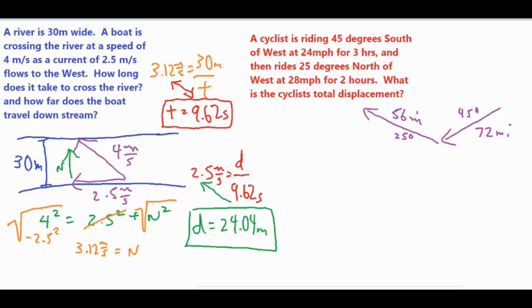This problem requires a few different steps. We need to find the x and y components of each vector. One vector goes west and north, the other goes west and south. We use trig: the vertical components are opposite the 45 and 25 degree angles, so we use sine (opposite over hypotenuse). The horizontal components are adjacent to the angles, so we use cosine. Let's set those up and solve.